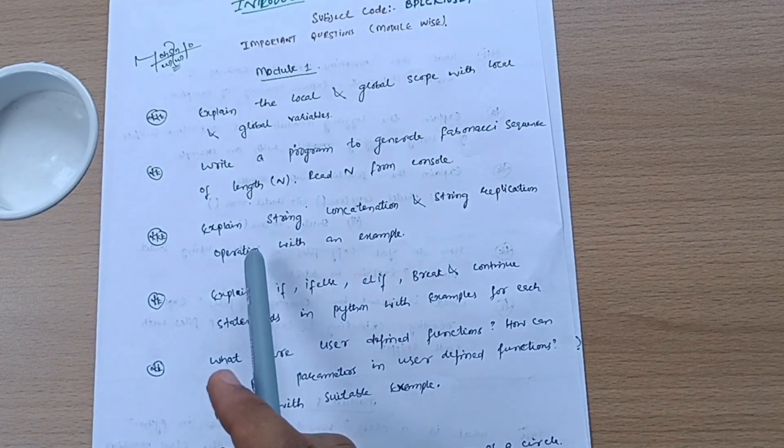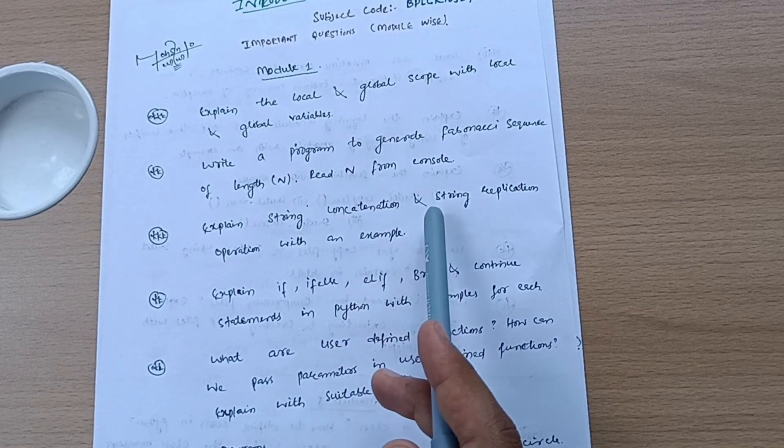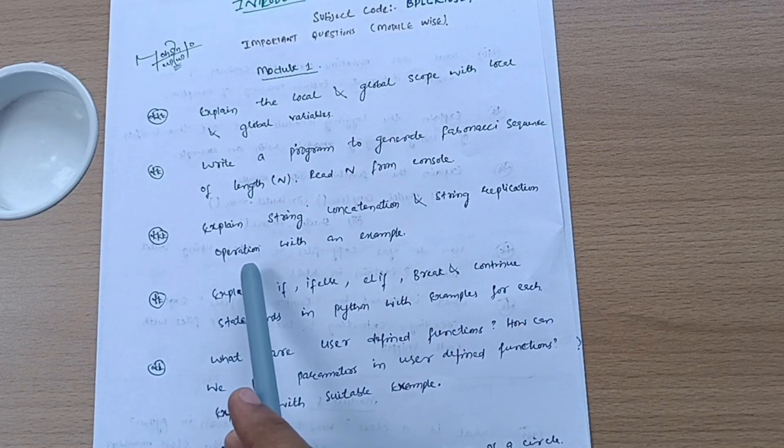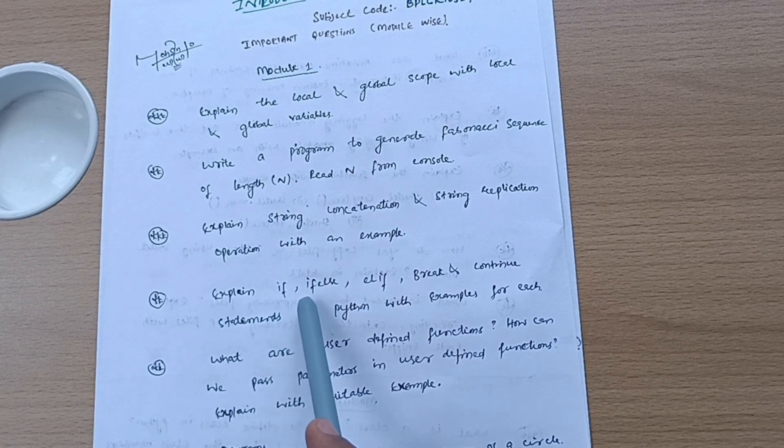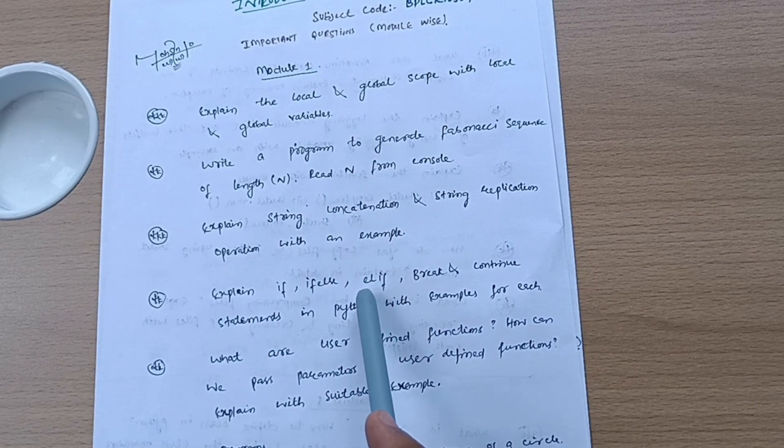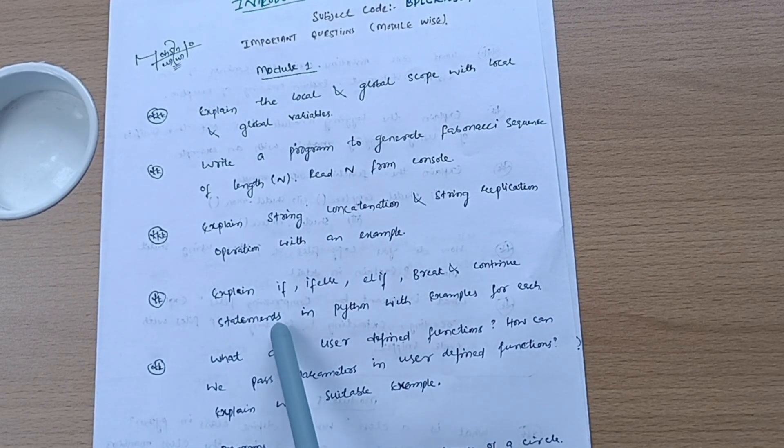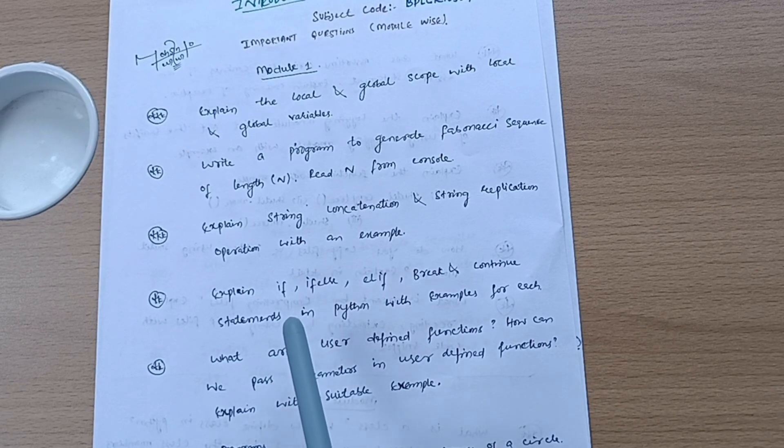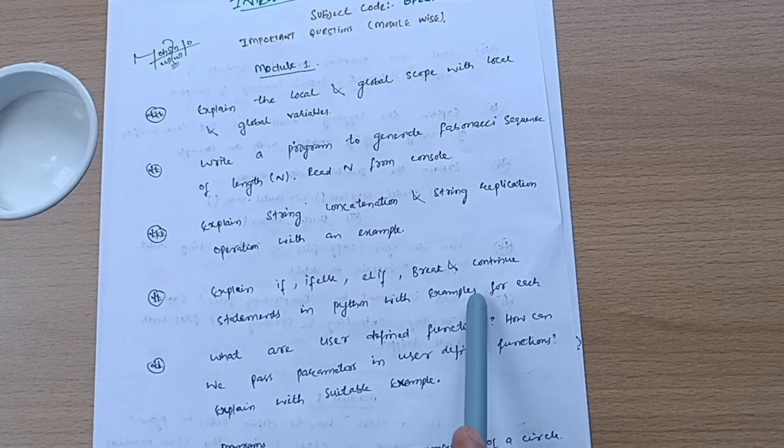Explain string concatenation and string replication operation with an example. Explain control statements like if, if-else, if-elif, break and continue statements, and sometimes while statements also in Python with examples for each. This is a super important one.